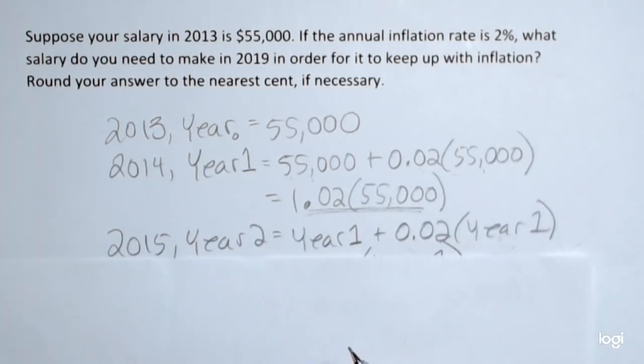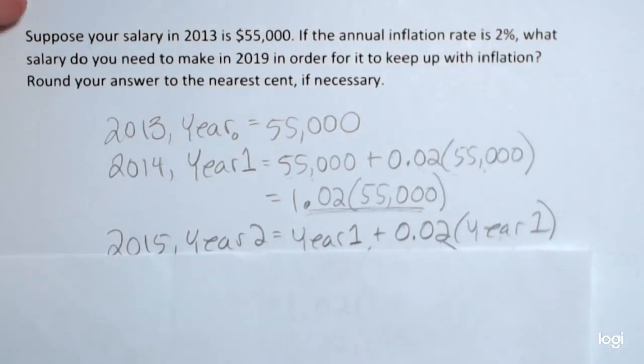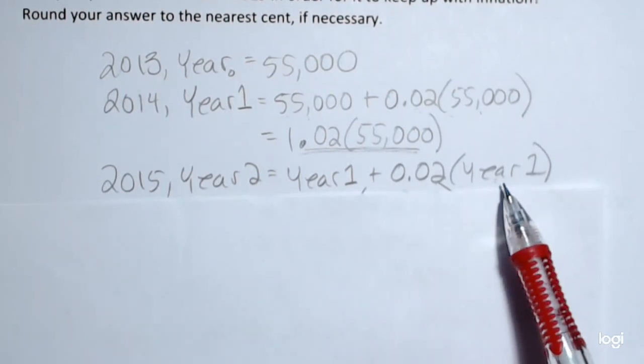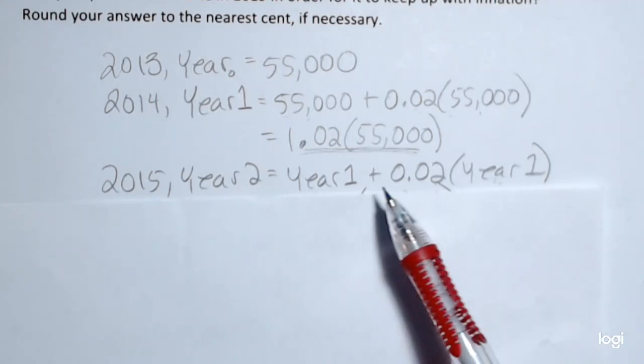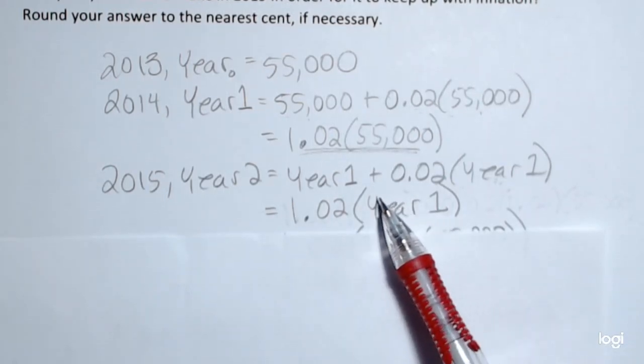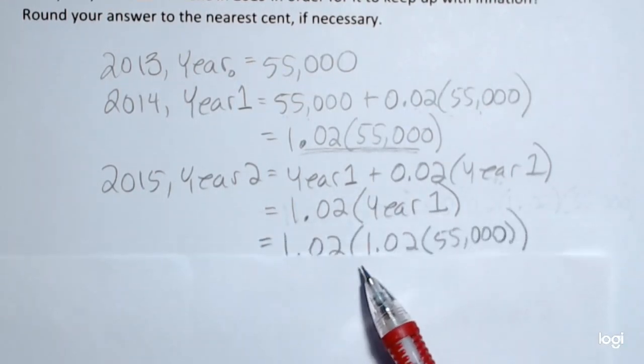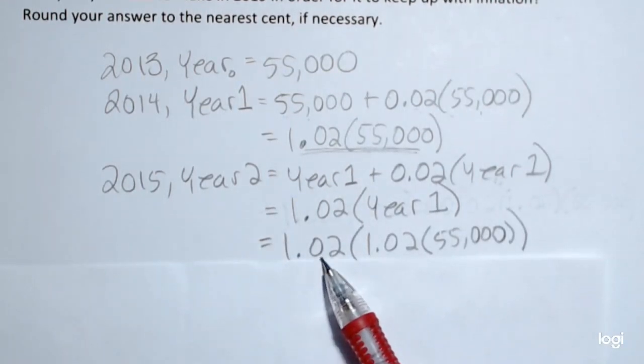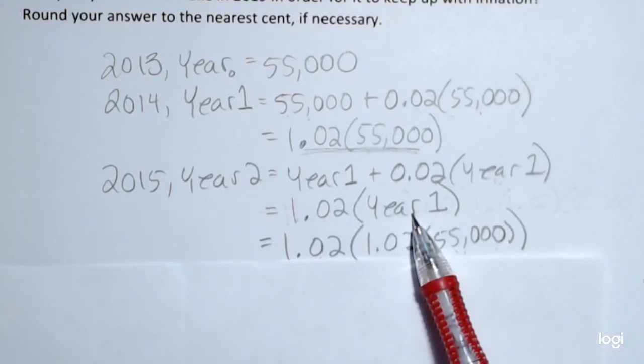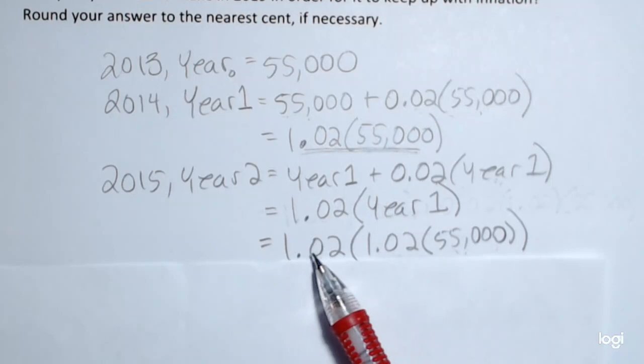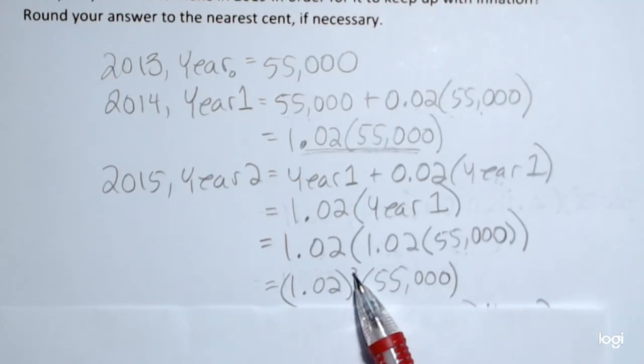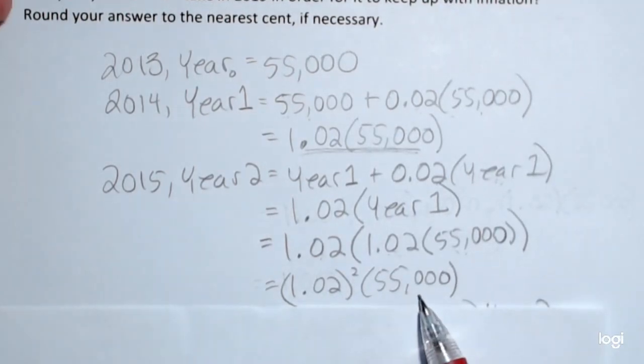For the next year, year 2015, I'll call that year two. It's going to be the previous year's salary, which is year one, plus 0.02 of that salary. Again, treating these as like terms, I'll get 1.02 times year one. And I can substitute in what year one is right here, so I'll get 1.02 times 1.02 times $55,000. This part here is year one salary. Recognizing the fact that I have repeated multiplication of the same factor, I can rewrite that as 1.02 squared times $55,000.